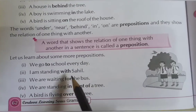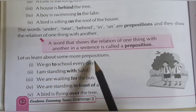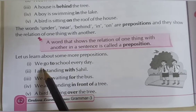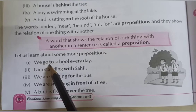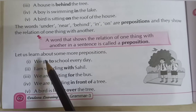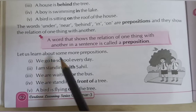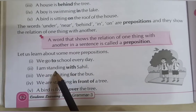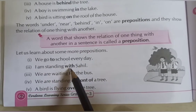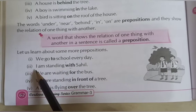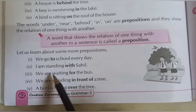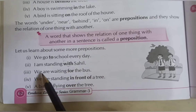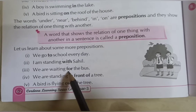Now let us learn about some more prepositions. 'We go to school every day' — the word 'to' shows the relation between 'we' and 'school'. Similarly, 'I am standing with Sahil' — 'with' shows the relation between 'I' and 'Sahil'. 'We are waiting for the bus' — the relation between 'we' and 'bus' is shown by the word 'for'.